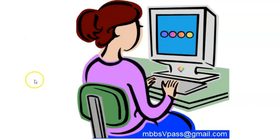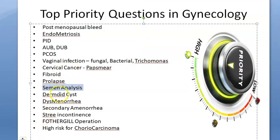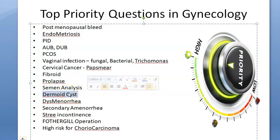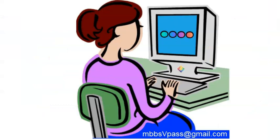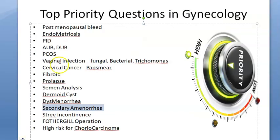Prolapse: know the layers, stages, procedentia, cystocele, and rectocele. Semen analysis was asked in the exam - know the pH, citrate, zinc, and other parameters. Dermoid cyst - benign cystic teratoma - remember it contains teeth and hair and is found in the ovary. Dysmenorrhea is pain - spasmodic or congestive - congestive will be pathological. Secondary amenorrhea: the patient had periods before but now doesn't - could be due to pregnancy, PCOS, pituitary or thyroid cause.